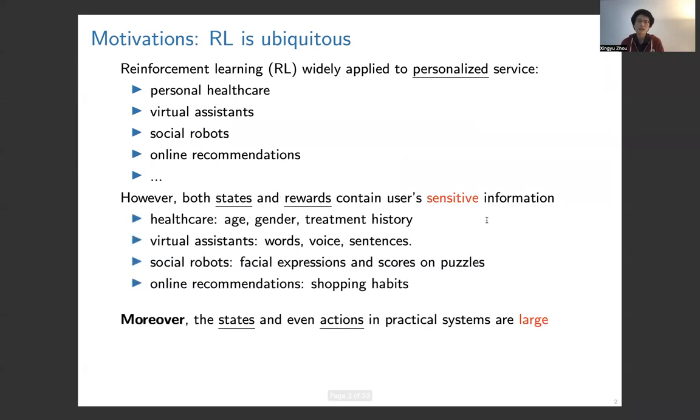In all these applications, states and rewards in the reinforcement learning systems often will leak user-sensitive information. For example, in healthcare, the age, gender, treatment history; in virtual assistants, words, voice, sentences.